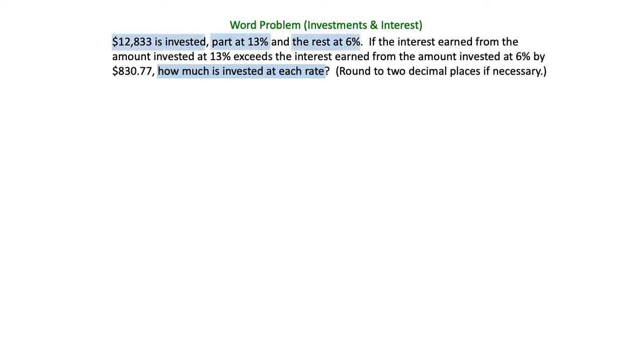The first sentence tells us the total invested and it also gives us the two different accounts. Part is going to be invested in the 13% account and the rest will be in a 6% account. So those are our two accounts.